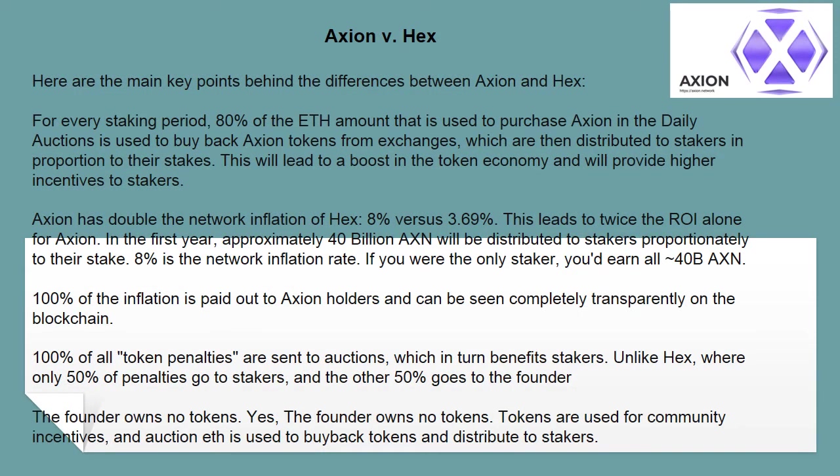Axion vs. HEX — here are the main key differences. For every staking period, 80% of the ETH amount used to purchase Axion in the daily auctions is used to buy back Axion tokens from exchanges, which are then distributed to stakers in proportion to their stakes. This will lead to a boost in the token economy and will provide higher incentives to stakers.